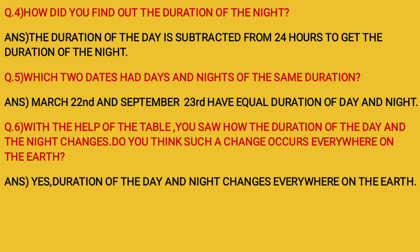Question: Which two dates had days and nights of the same duration? Answer: March 22nd and September 23rd have equal duration of day and night.